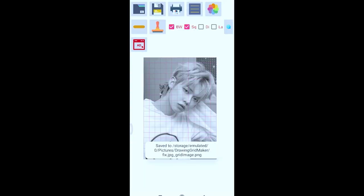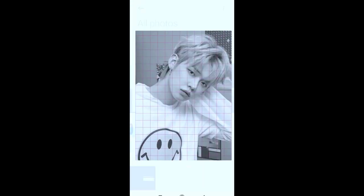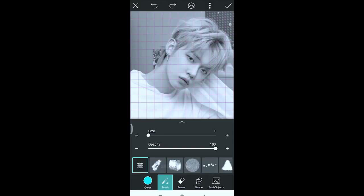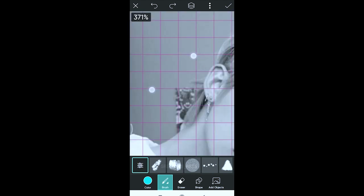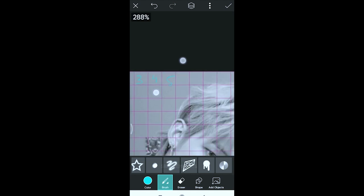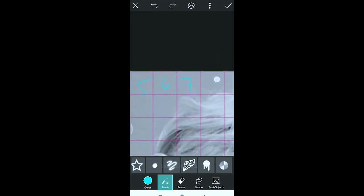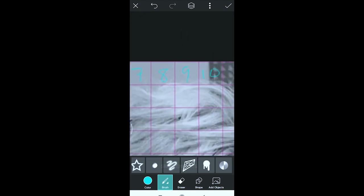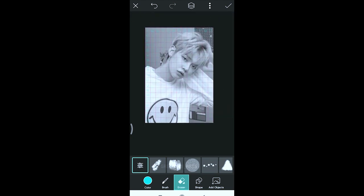Now I'm going to number the boxes using PicsArt. You can use any kind of app that allows you to draw on pictures. So I'm numbering the columns 1 to 13 and the rows 1 to 19. So here we have it and I'm going to save it.